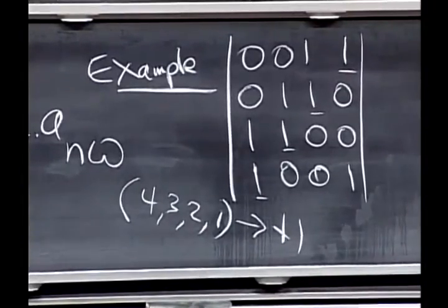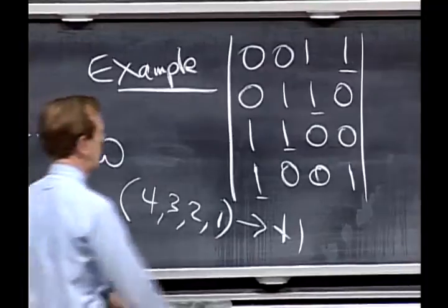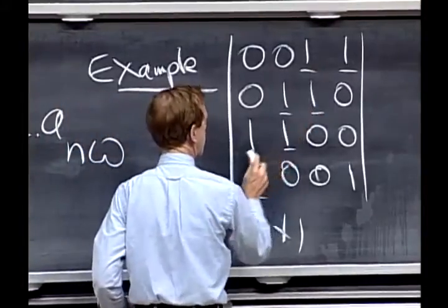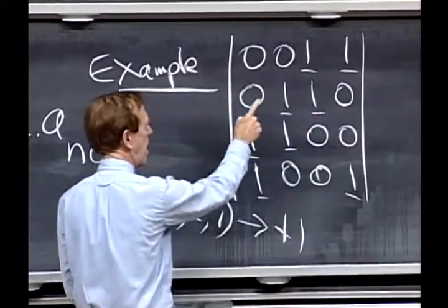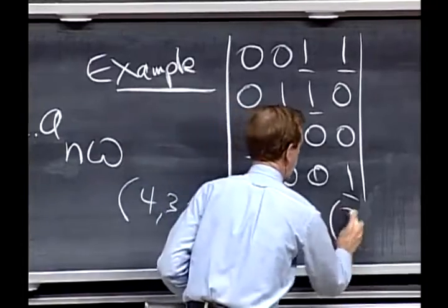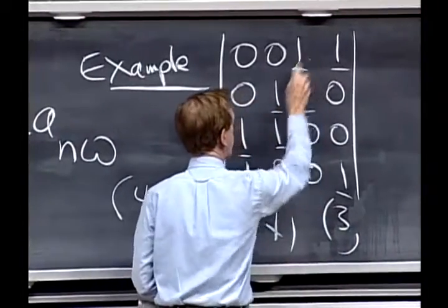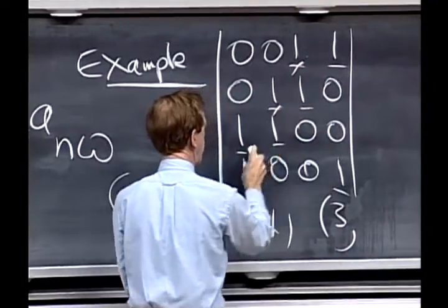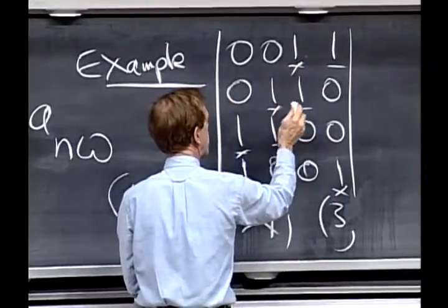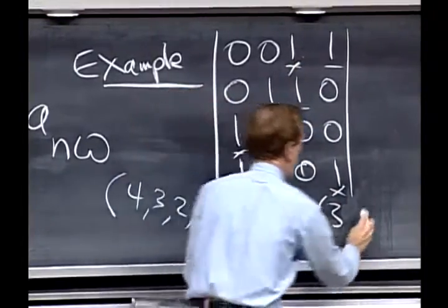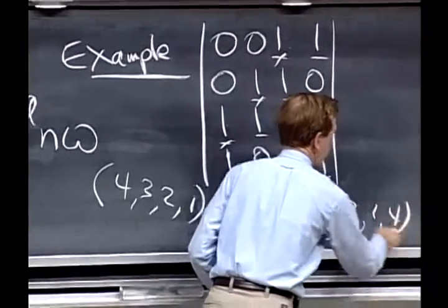Are there any others? Well, of course we see another one here. This times this times this times this strikes us right away. So that's the order 3, 2, 1, 4. Let me make a little different mark here. Three, two, one, four. And is that a plus or a minus?